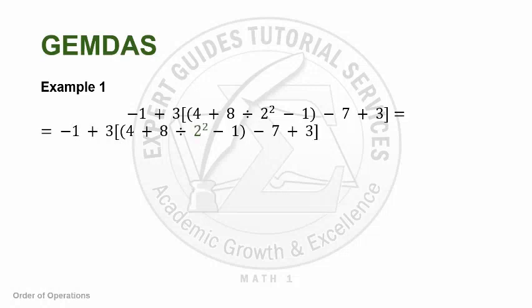Let's try a particular example. Suppose you have negative 1 plus 3 times the quantity 4 plus 8 divided by 2 squared minus 1 minus 7 plus 3.